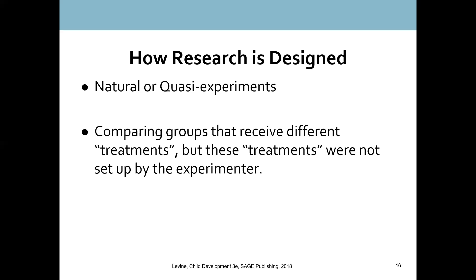If you're ever reading about an experiment and they say it's a natural or quasi-experiment, remember to interpret the results cautiously. We cannot be as strong with our conclusions — you cannot end up with that firm causal statement like 'I found that incarceration causes this difference in children,' because we simply don't know that. That concludes the experimental research design section. In the next section, we will look at correlational research.